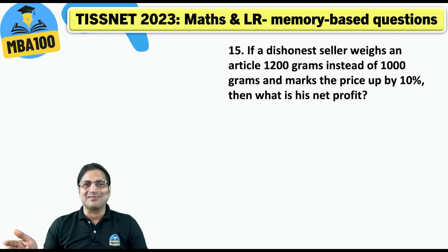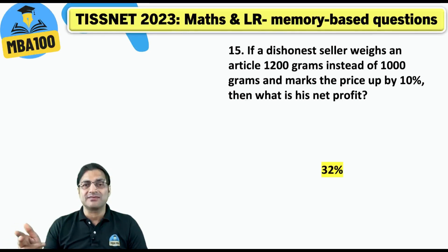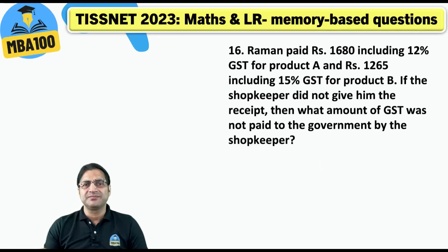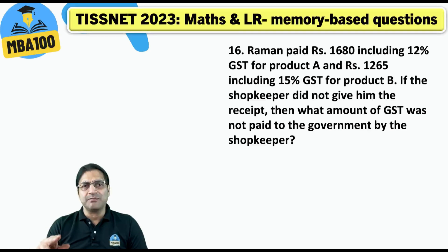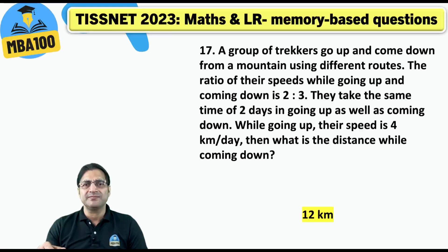20 percent and 10 percent — two successive increases will give you an increase of 32 percent. That is your answer. Another simple question: 1500 plus 180, and 1100 plus 165. So 180 plus 165 gives 345 as your answer.